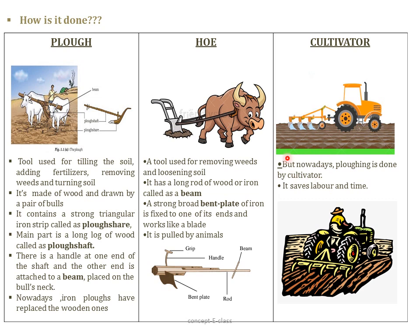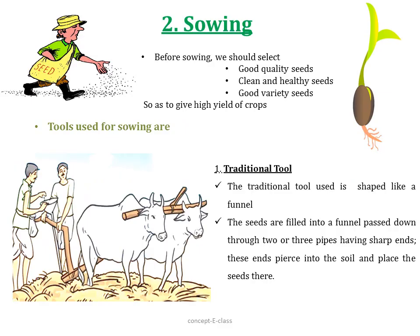The third tool is the cultivator. Nowadays we use a cultivator for ploughing. It is attached to a tractor and contains a frame with teeth that is dragged along in linear lines. This is how a cultivator works, and nowadays ploughing is done using a cultivator.